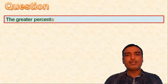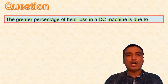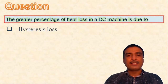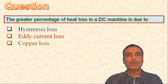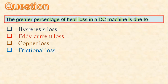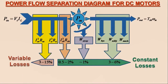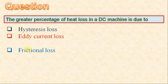Next question: the greater percentage of heat loss in a DC machine is due to — hysteresis loss, eddy current loss, copper loss, or frictional loss. Copper loss is proportional to the square of the current. Since the armature current of a DC machine is very large, the greater percentage of heat loss is due to armature copper loss. So the third option is correct.